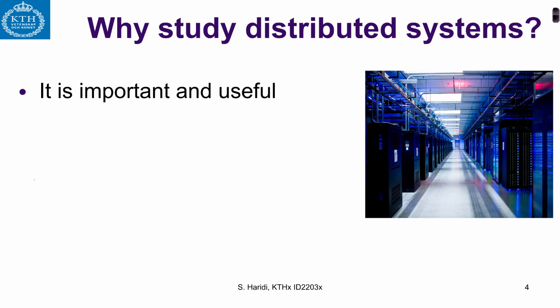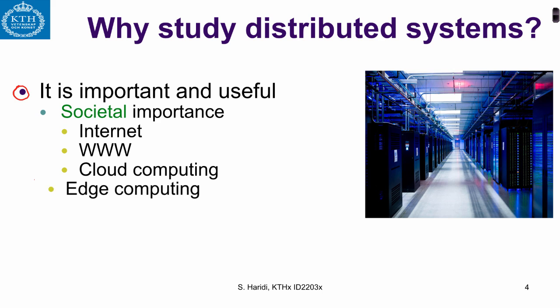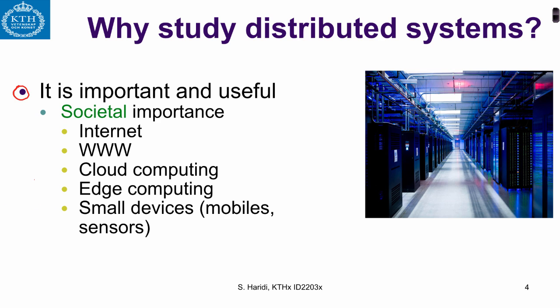So why are distributed systems interesting? Because they are important and useful in many aspects of society. The Internet is a distributed system. The World Wide Web is a distributed system. Cloud computing with data centers is a distributed system. Edge computing where devices communicate together is also a distributed system. Distributed systems are everywhere nowadays.